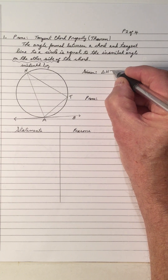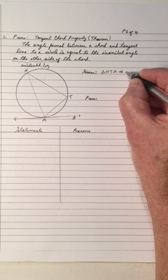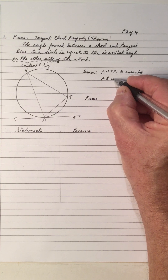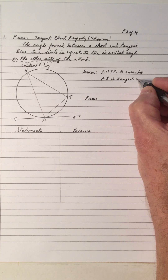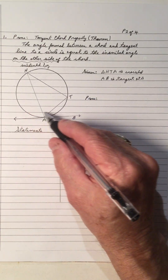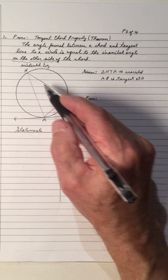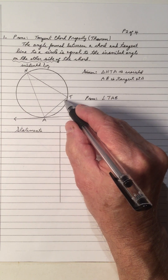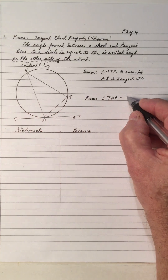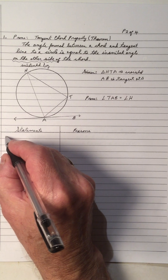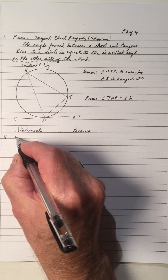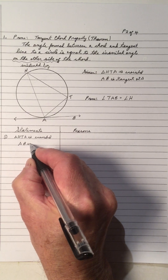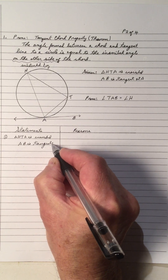We're given that triangle HTA is inscribed, and we're given that AB is tangent at A. So here is AB tangent at A, and this triangle is inscribed because we have a chord and the inscribed angle is subtended by the chord.